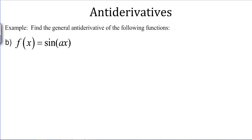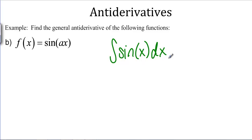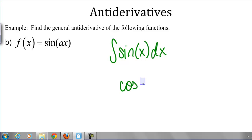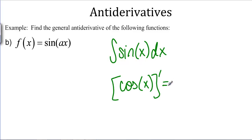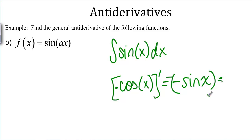Another example: what is the antiderivative of sine of X? We might think cosine of X, but the derivative of cosine of X is negative sine of X. If we actually want an antiderivative of sine of X, we need negative cosine, because the derivative of negative cosine is negative times negative sine, giving us back sine. So a specific antiderivative of sine of X is negative cosine of X, and the general antiderivative is negative cosine of X plus C.